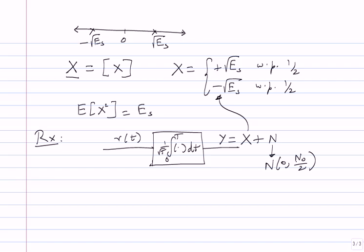If you repeat this experiment several times and plot the received y values, they cluster around +sqrt(E_s) and -sqrt(E_s). This is the received signal constellation. The intuitive decoding rule is: if y is positive, decide bit 0; if y is negative, decide bit 1. We will derive this formally and confirm the intuition is justified in theory. You make an error when the noise is large enough to move the point past the origin to the other side.